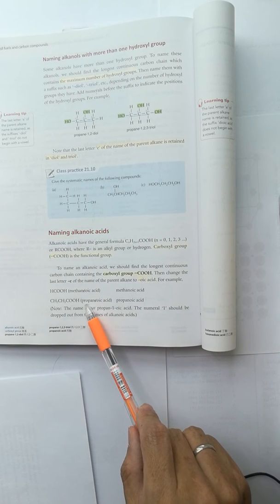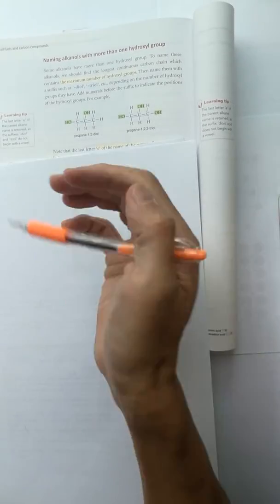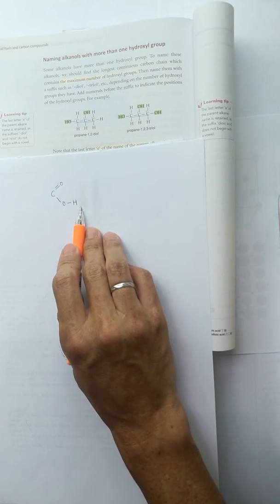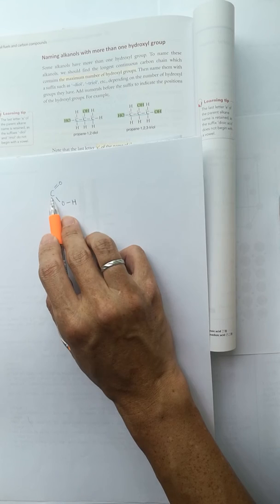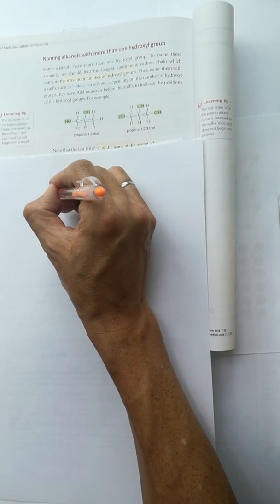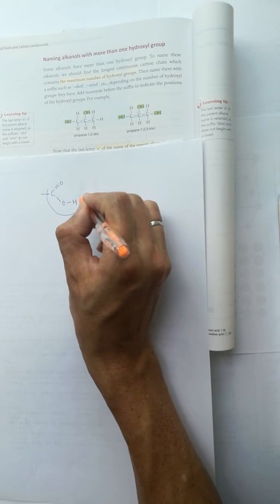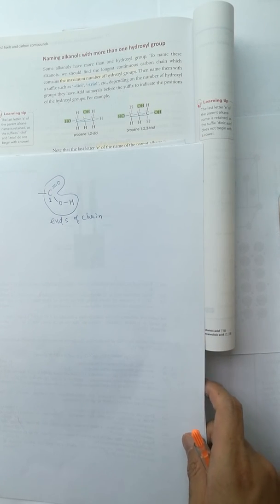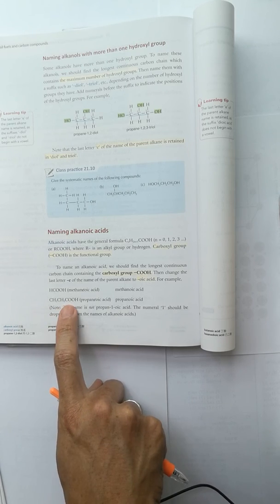And then when you look at propanoic acid, no numbering is necessary. Why? Because the oic acid, the acid group COOH, the oxygen has two bonds with carbon, another oxygen has one bond with this carbon, and this carbon maximum has four bonds. So the acid group is always at the end, at the ends of the chain. It is the number one carbon. We understand which is the number one carbon, so no need to add the number. We know that the acid group occurs at the first carbon.